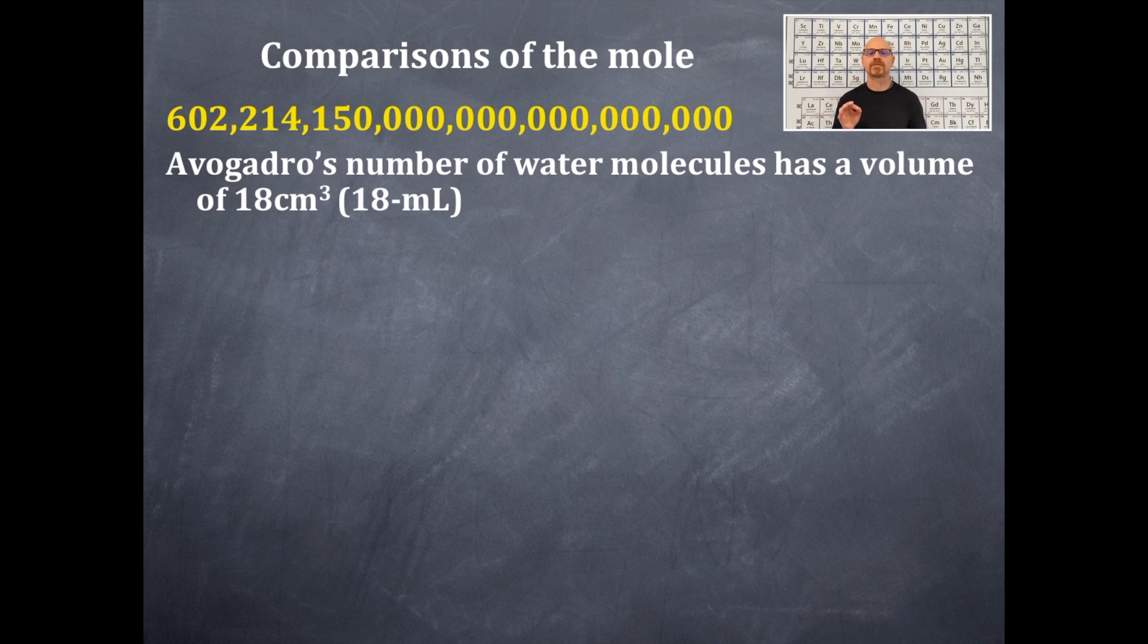Avogadro's number of water molecules has a volume of 18 cubic centimeters or 18 milliliters. That is, I have a graduated cylinder right here, and it has 18 milliliters in there. If you were to count the number of water molecules in here, there would be 6.022 times 10 to the 23rd water molecules right in this.